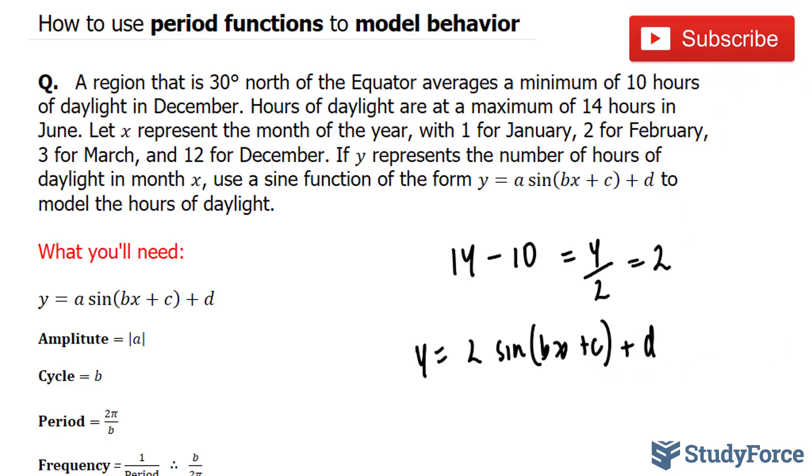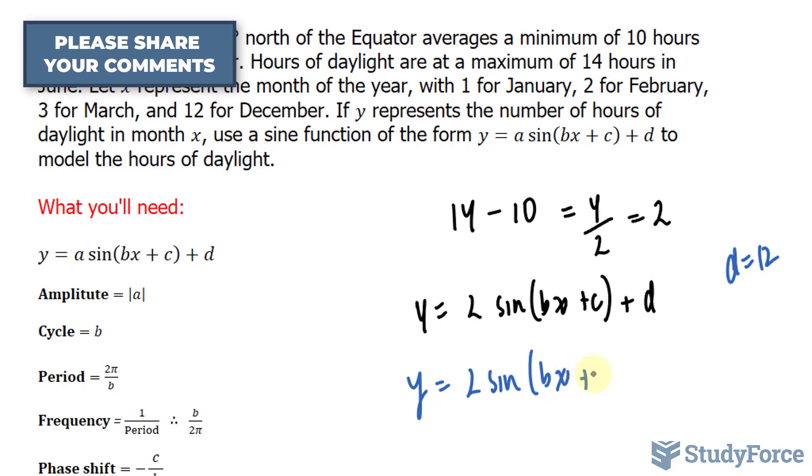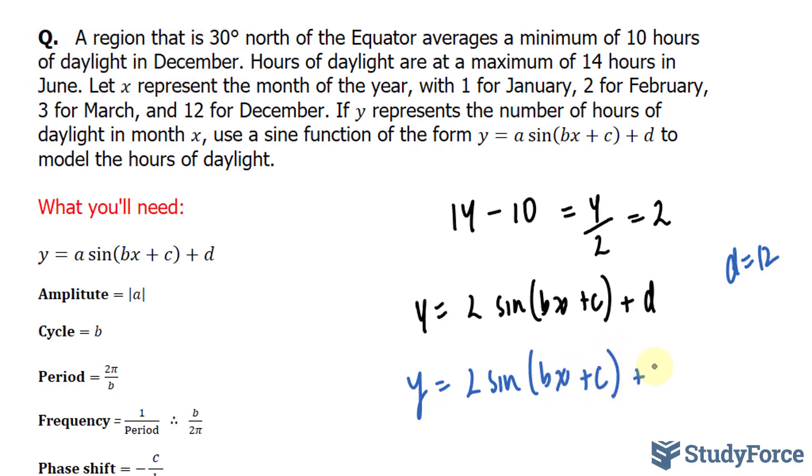d represents the translation of the waveform up or down. We're told that it's a maximum of 14 and a minimum of 10. This means that halfway between 14 and 10 is 12. Therefore d represents 12. Let's write that in. We have y = 2 sin(bx + c) + 12.